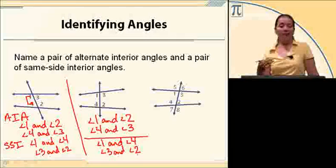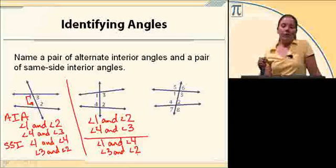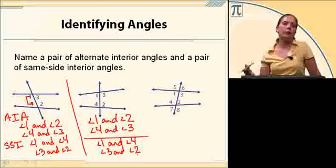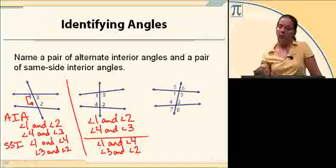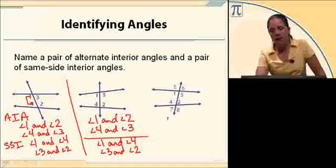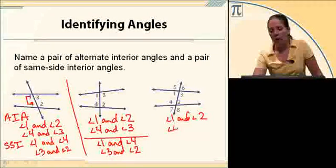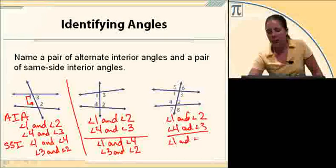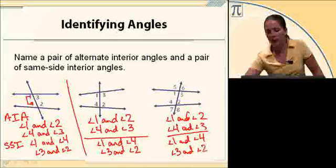On the last figure, there are more labeled angles. Angles five, six, seven, and eight are exterior angles because they're on the outside of the two lines cut by the transversal. The alternate interior angle pairs are angle one and angle two, and angle four and angle three. Same side interior pairs are angle one with angle four, and angle three with angle two.